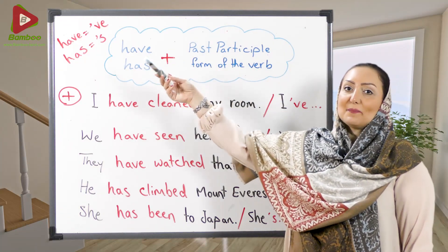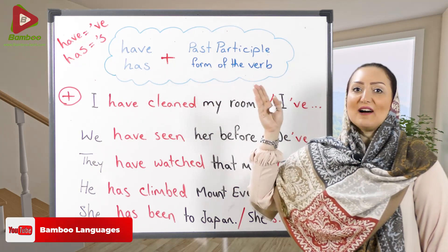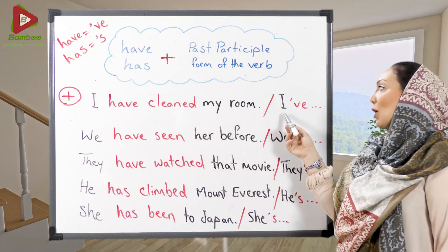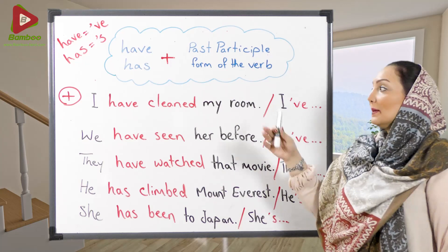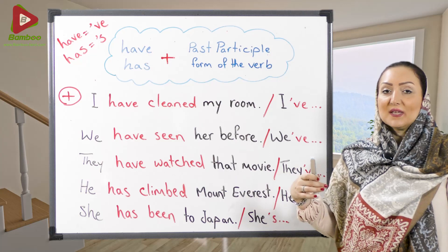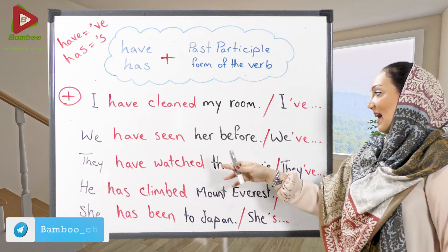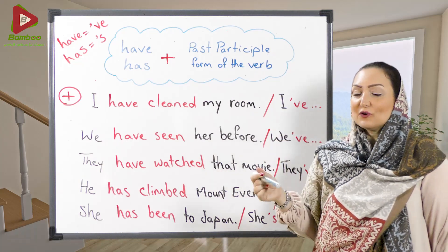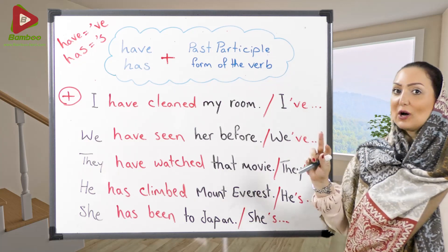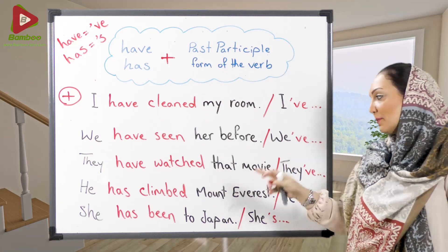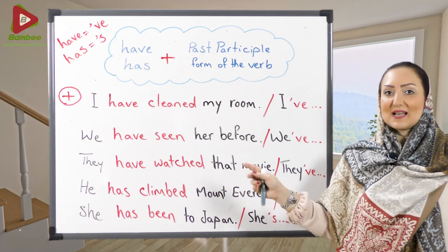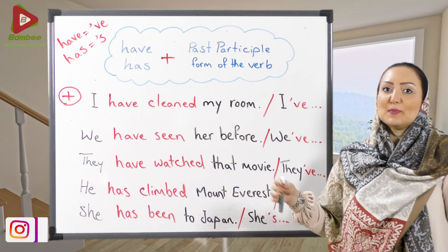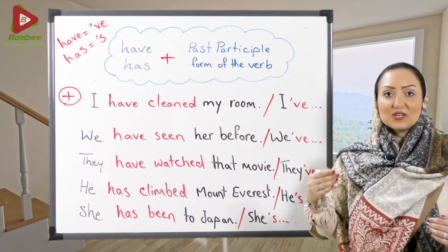نکته مهم: contracted form هم برای خود have/has داریم (apostrophe ve / apostrophe s)، هم برای have not / has not. Contracted forms: haven't و hasn't. به جای I have not met her میتونیم بگیم I haven't met her یا I've not met her. He hasn't called me — He has not called me. قطعاً he is not called نداریم، پس apostrophe s اینجا مخفف has هست نه is.